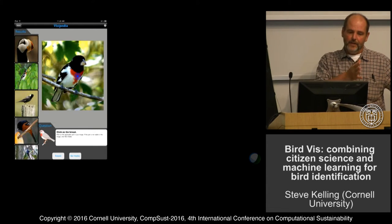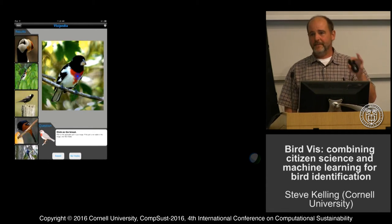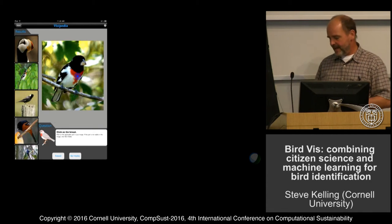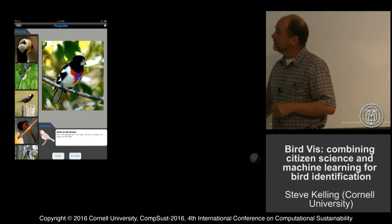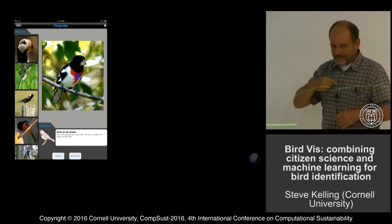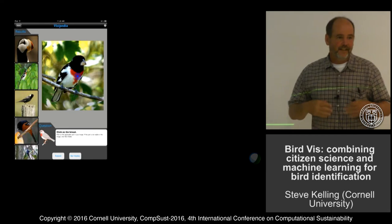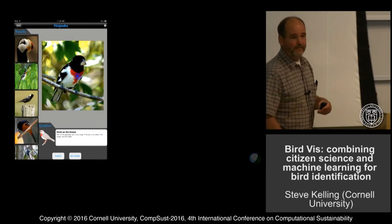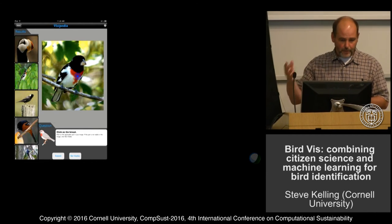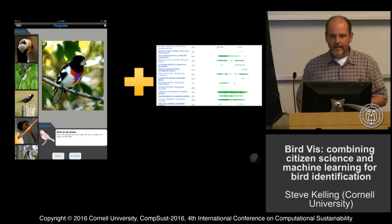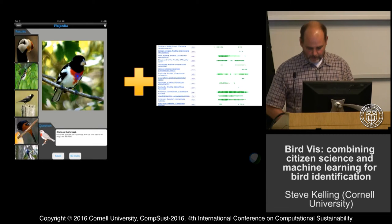The second piece where we employ citizen scientists is for all these images. We have a project called Merlin where volunteers go in and put a dot on the breast of a bird and on the beak and things like that, to help train the machine vision model. We have about 15,000 people who go through all of these images. This combination of probability and these marked-up images is what we use to build the model.